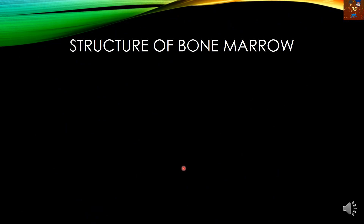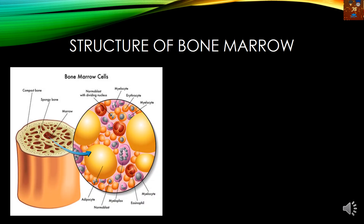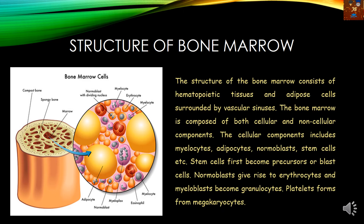Now, the structure of the bone marrow. Regarding the structure, we can see that different types of cells are present in the bone marrow — cells like myelocyte, erythrocyte, normoblast with the dividing nucleus, and all these cells give rise to different types of blood cells. As you can see here, different types of blood cells are given rise to. The cellular components include the myelocyte and adipocytes.